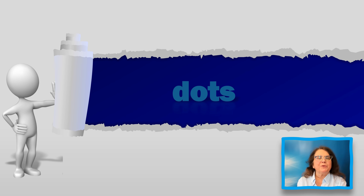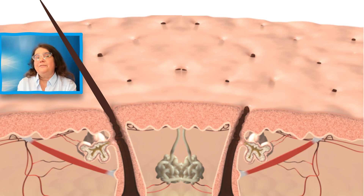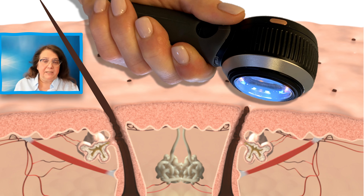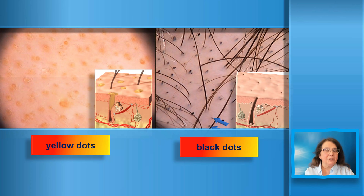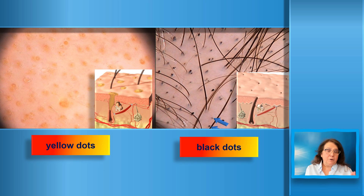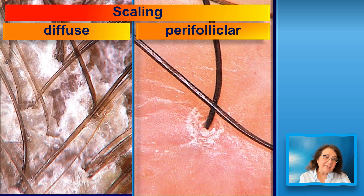A second frequently evaluated structure is the dots. If there is loss of hairs, what will be left are empty hair follicles or follicles filled with residue of the hair. When you look at the skin through a dermoscope, what you see are the dots. Today I will show two types: yellow dots and black dots. Both are very common in alopecia areata, but both may also be present in other diseases which cause hair loss.